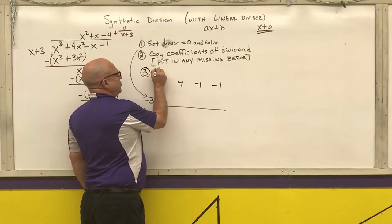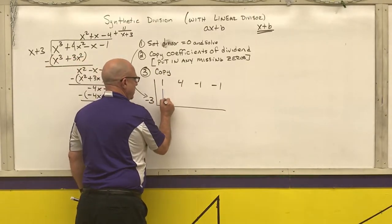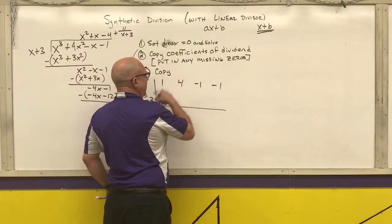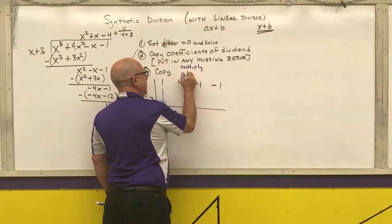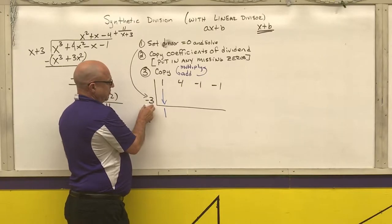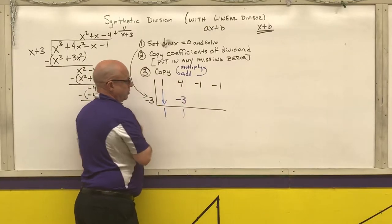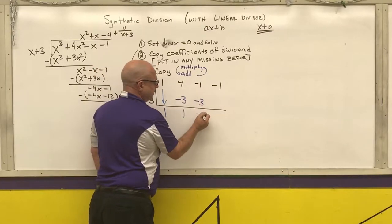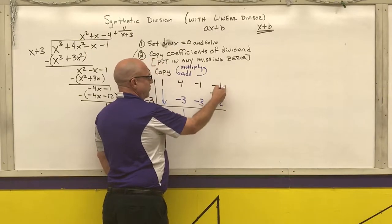The first step is to copy — I'm going to take that 1 and copy it down. Then the steps I'm going to repeat are multiply and add. I take this 1 times the negative 3 and get negative 3. Then I add: 4 minus 3 is 1. Multiply: 1 times negative 3 is negative 3. Add: negative 1 minus 3 is negative 4. Multiply: negative 3 times negative 4 is 12. Add: negative 1 plus 12 is 11.